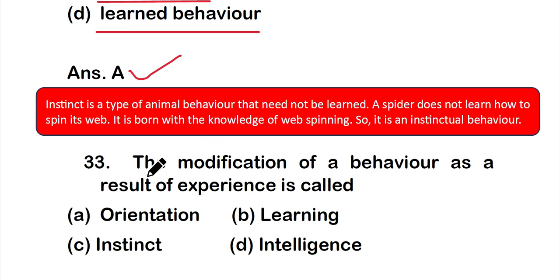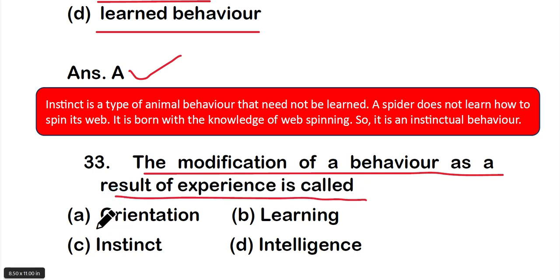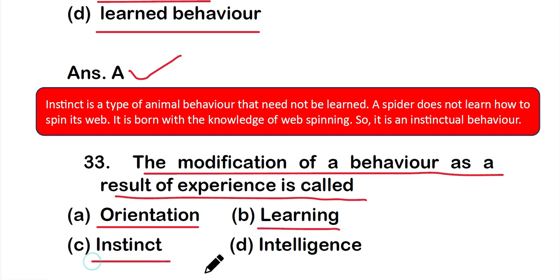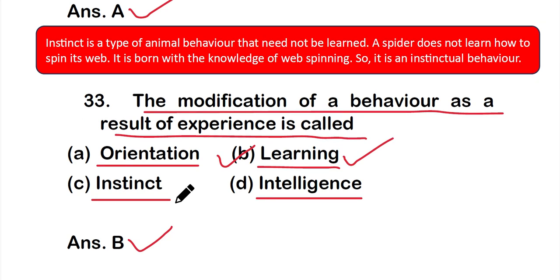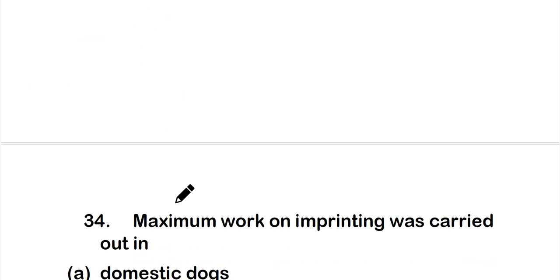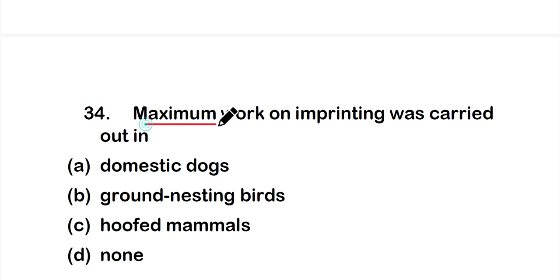Question number 33: The modification of a behavior as a result of experience is called — option A: orientation, option B: learning, option C: instinct, or option D: intelligence. The correct answer is option B — learning. The modification of a behavior as a result of experience is called learning.